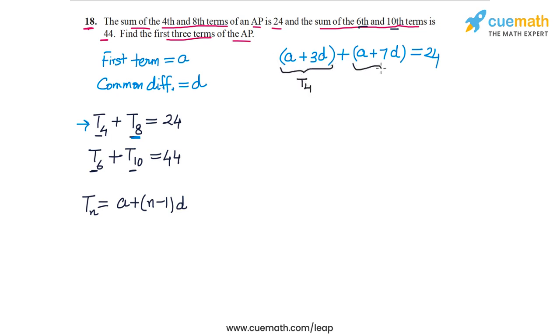This gives us a linear equation in A and D. So we have 2A plus 10D equals 24.